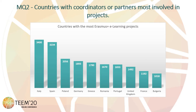The second mapping question has to do with the countries with coordinators or partners involved in Erasmus Plus projects connected to e-learning. We have found that Italy is the one with the most number of projects, followed by Spain.